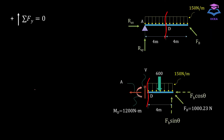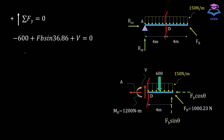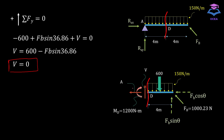Applying the second equation of equilibrium, summing all forces in the Y direction equals zero, taking upward forces as positive. We have minus 600 (downward) plus FB sin(36.86°) (upward, positive) plus V (upward) equals zero. Solving gives V equal to zero. So the shear force at point D equals zero.